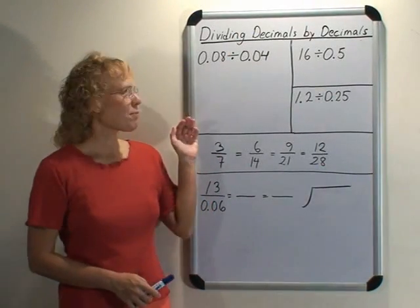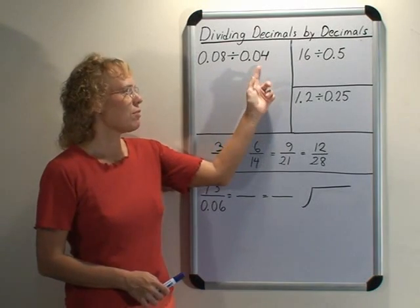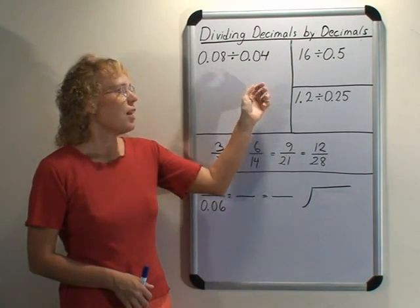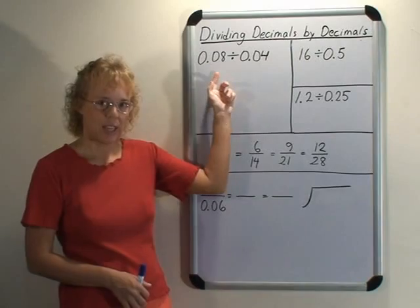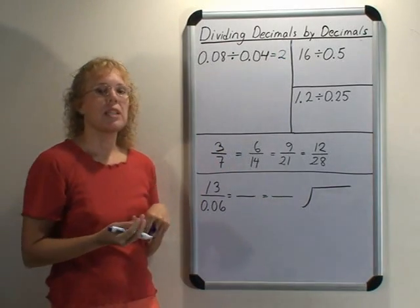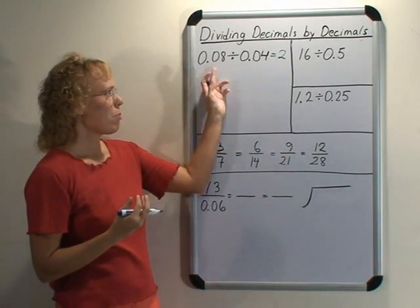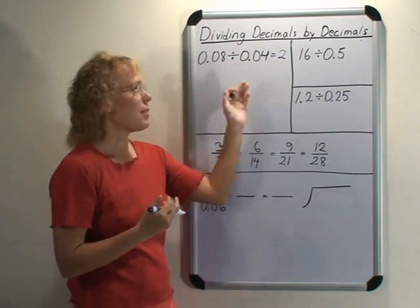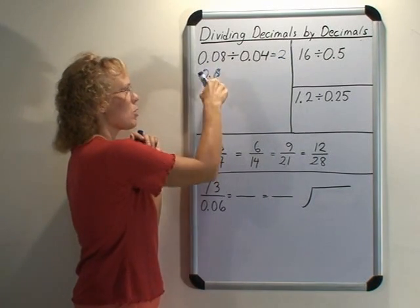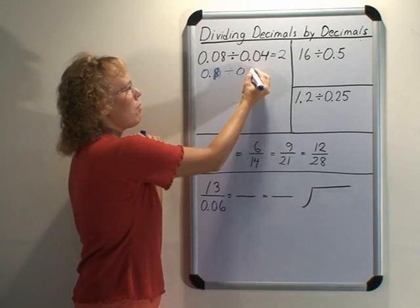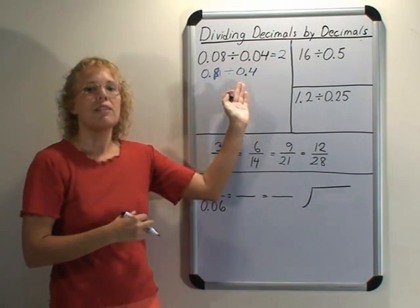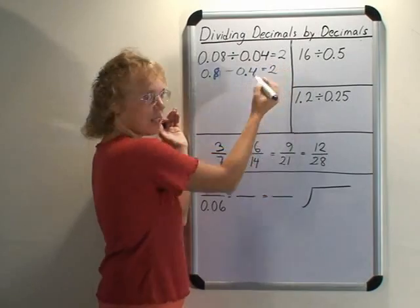Let's look at some more examples. Here, 0.08 divided by 0.04. You can think of this as 4 hundredths and 8 hundredths. How many times does 4 hundredths fit into 8 hundredths? The answer is obviously 2. But to illustrate the principle we are using when dividing by decimals, I'm going to multiply both the dividend and the divisor by 10. You get 0.8 divided by 0.4. Here, 0.4 fits into 0.8, or 4 tenths fits into 8 tenths, again 2 times. And that does make sense.